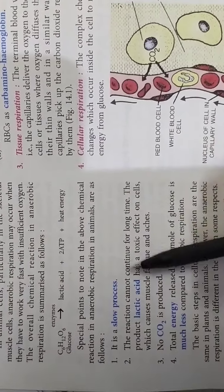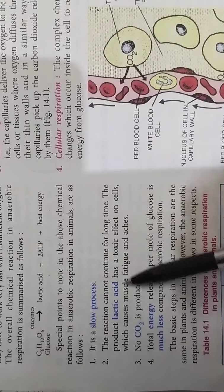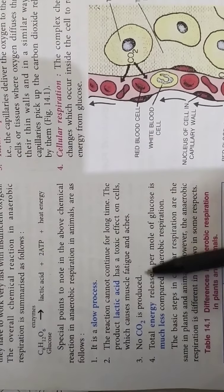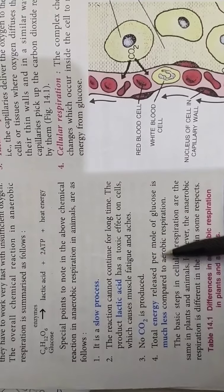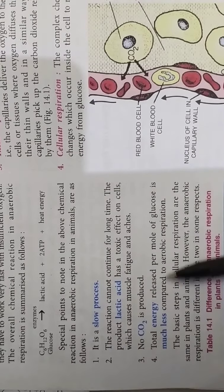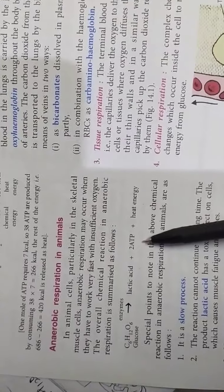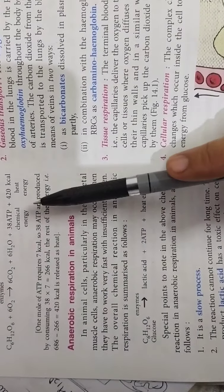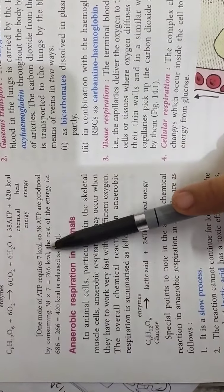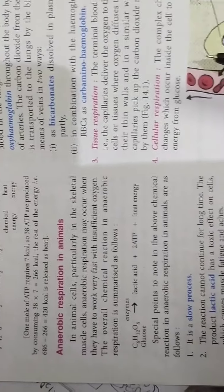So special points which you need to take care in anaerobic respiration, that it is slow process. It produces lactic acid. No carbon dioxide is produced. And total energy release per glucose molecule is much less. Here it is only two ATP molecules, whereas in aerobic respiration it will be 38 ATP molecules per molecule of glucose.